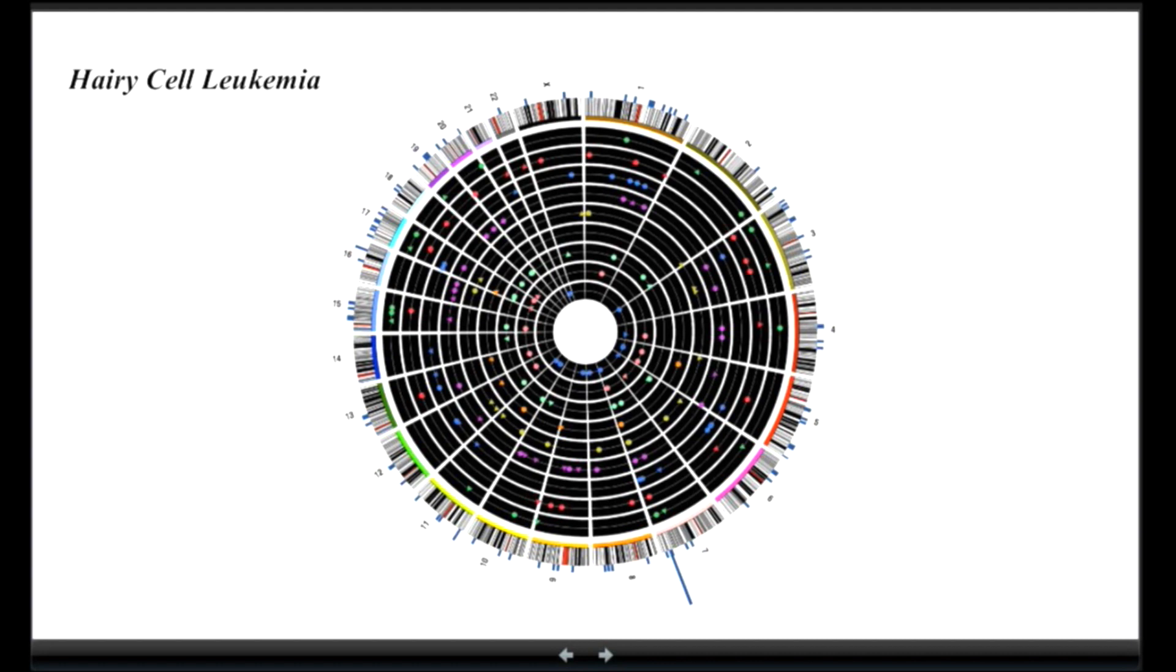Each of these circles, these concentric circles, represent a patient. So there is a blue patient here in the middle. There is a pinkish patient, orange, I don't know, green, orange, yellow, magenta, different patients. So there are nine circles here.